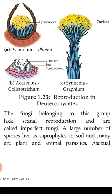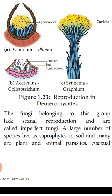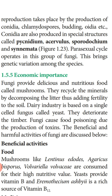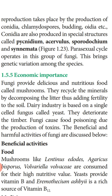A large number of Deuteromycetes species live as saprophytes in the soil, and many are plant and animal parasites. Asexual reproduction takes place by conidia, chlamydospores, budding, oidia, etc. Conidia are also produced in special structures: pycnidium, acervulus, sporodochium, and synnema.